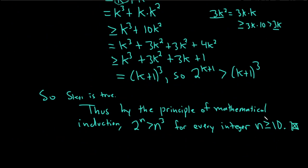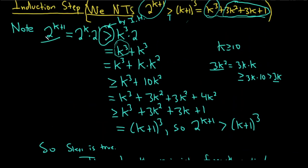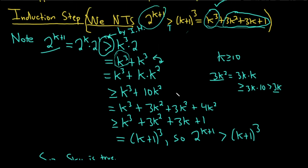That's a cool problem. I think the base case and conclusion become pretty routine. Maybe the hardest part is knowing to involve k squared to create the inequality, and then using the condition k ≥ 10. Once you get past that, it's pretty easy to break it up and see that it works. Good luck. Take care.